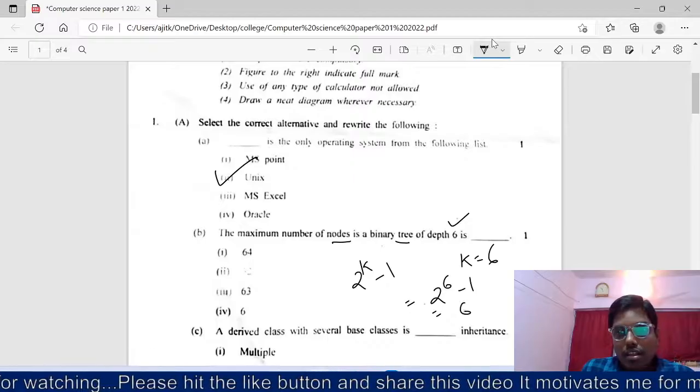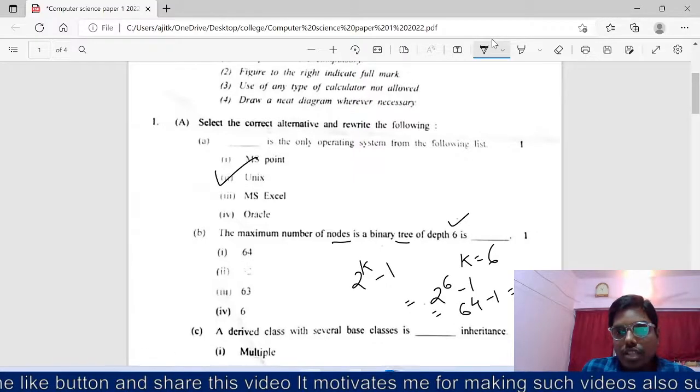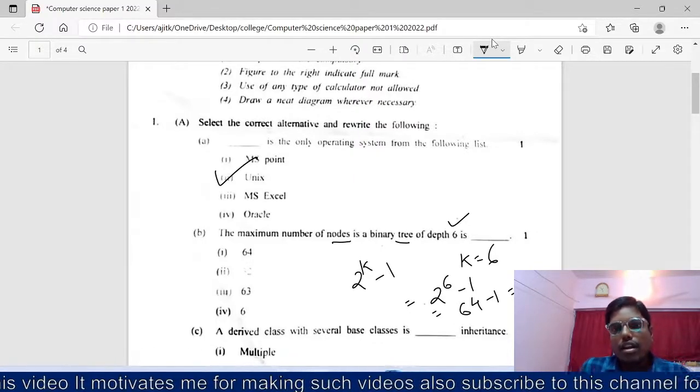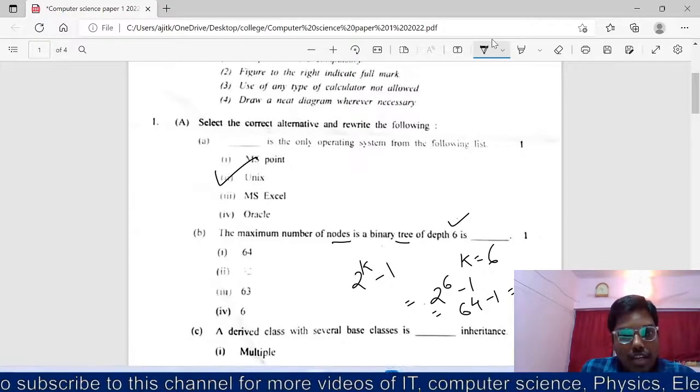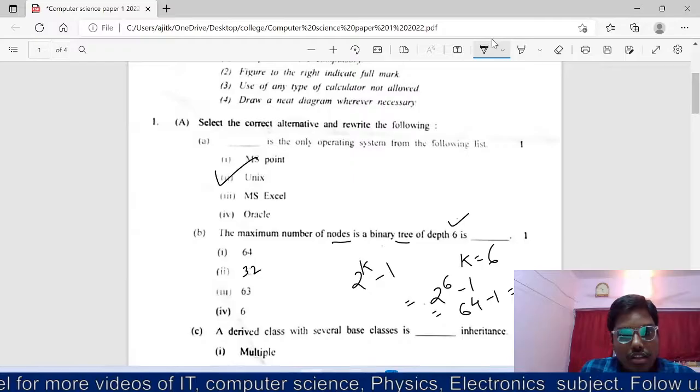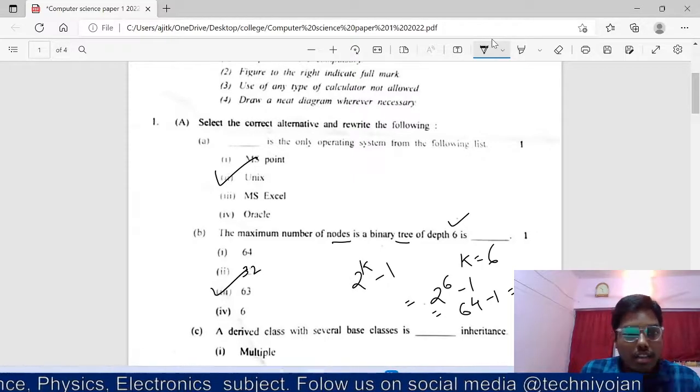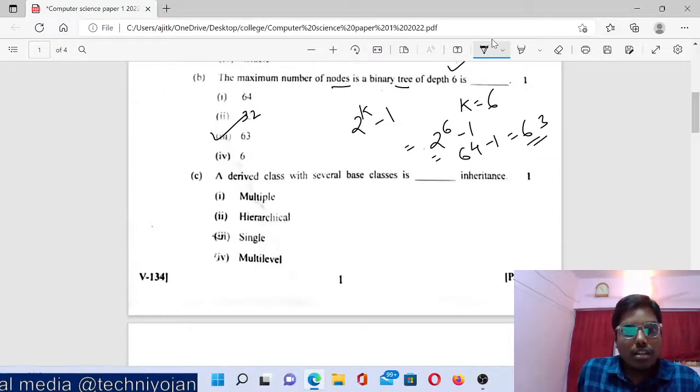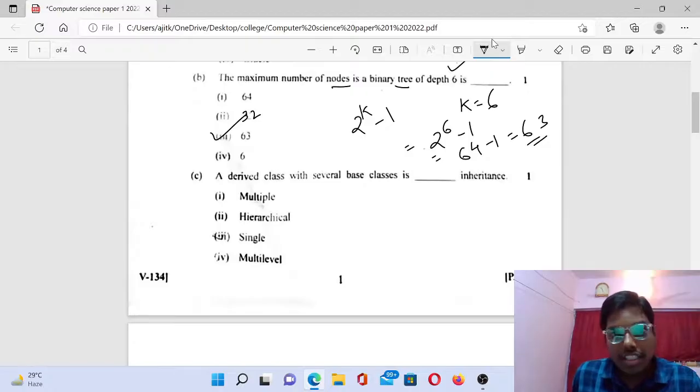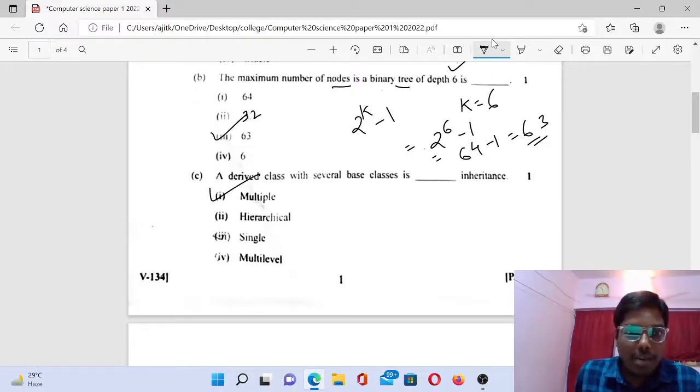2 raised to 6 is 64 minus 1, which equals to 63. So the answer is 63. There are four options, the correct answer is 63. The derived class with several base classes is multiple inheritance.